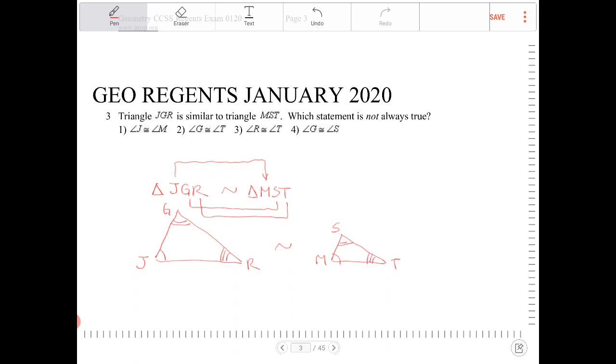Me labeling the third angle in each of these triangles here is a little redundant because for two triangles to be similar, all we need is just two angles to be congruent - two corresponding pairs of angles to be congruent.